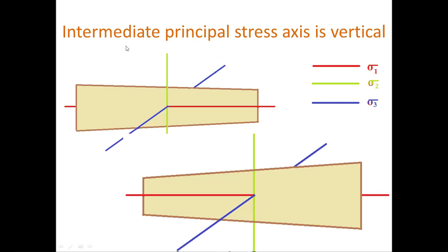Now let's take the third condition — the intermediate principal stress axis is vertical. In case one, we had sigma one vertical; in case two, sigma three vertical; now sigma two is vertical. The remaining two — the maximum and minimum principal stress axes — should be horizontally lying, because all principal stress axes are mutually perpendicular. As per the rules, the plane should be oriented so that it contains the intermediate principal stress axis and makes an angle of 30 degrees with the maximum principal stress axis. This plane is making a 30-degree angle with sigma one, passing through and covering the intermediate principal stress axis.